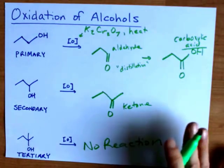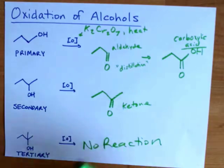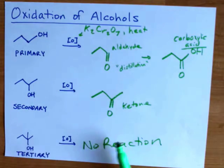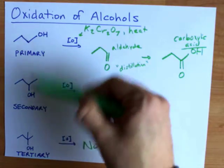If you ever needed to tell the difference between a primary or secondary or tertiary alcohol you could put it in dichromate and if there's no reaction you know it's tertiary. If there is a reaction you know it's one of these two.